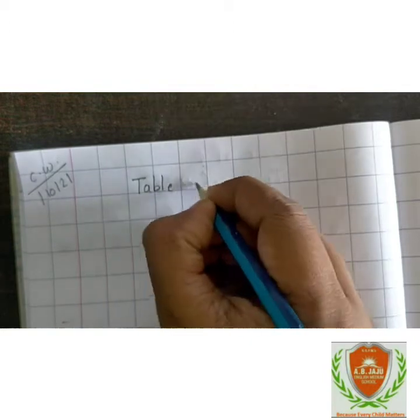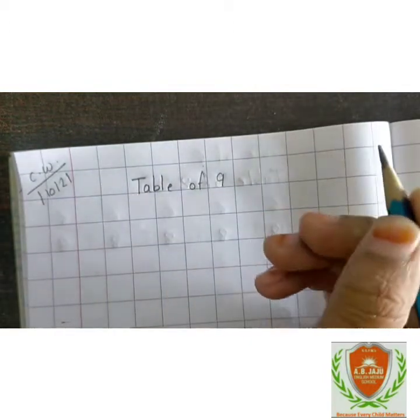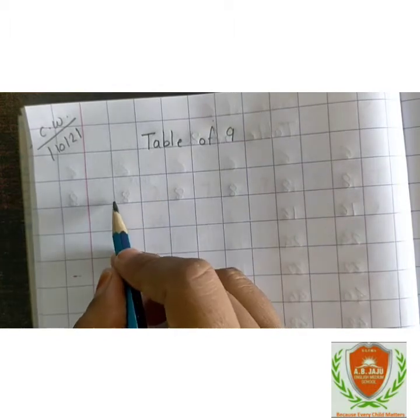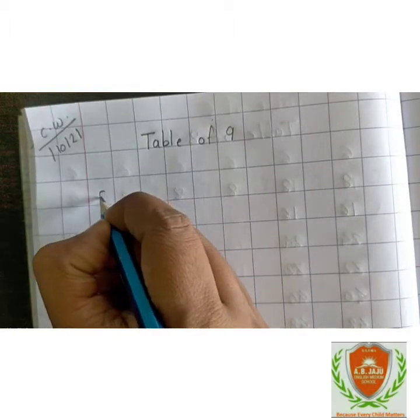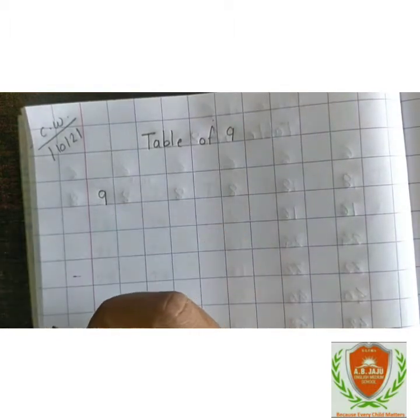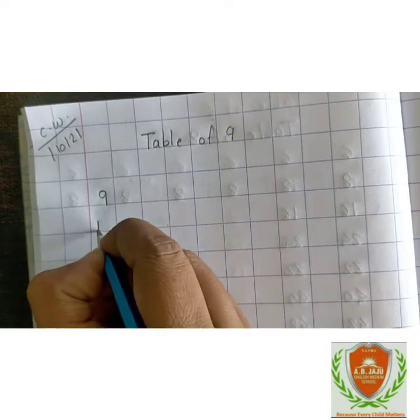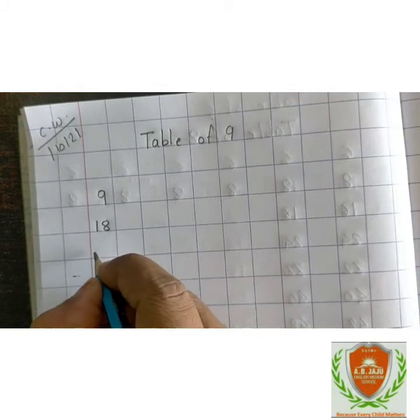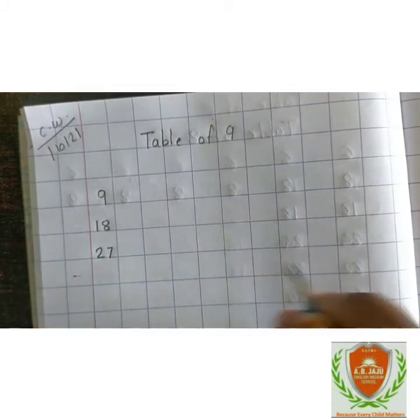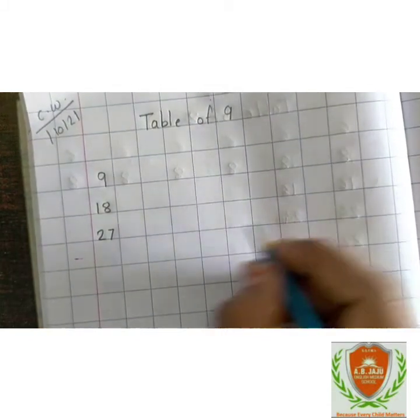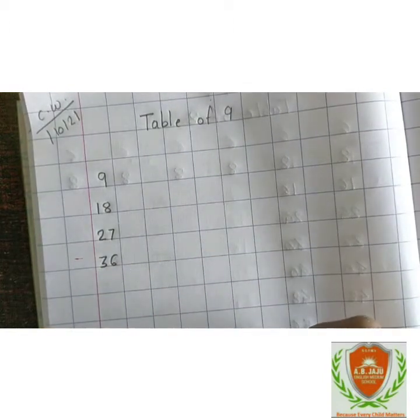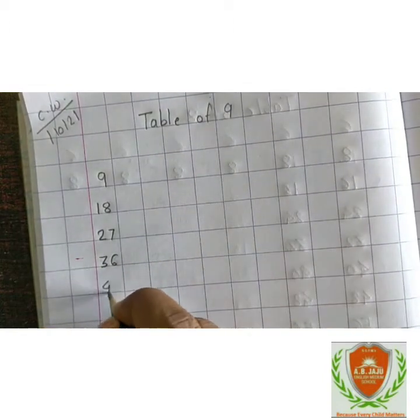First we will see table of 9. Repeat after me. 9 ones are 9, 9 twos are 18, 9 threes are 27, 9 fours are 36.